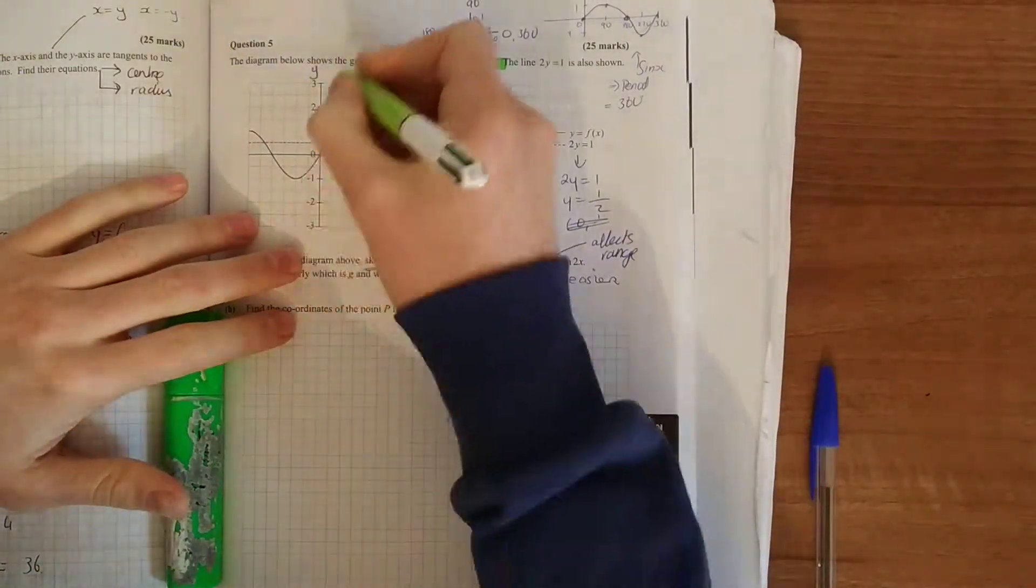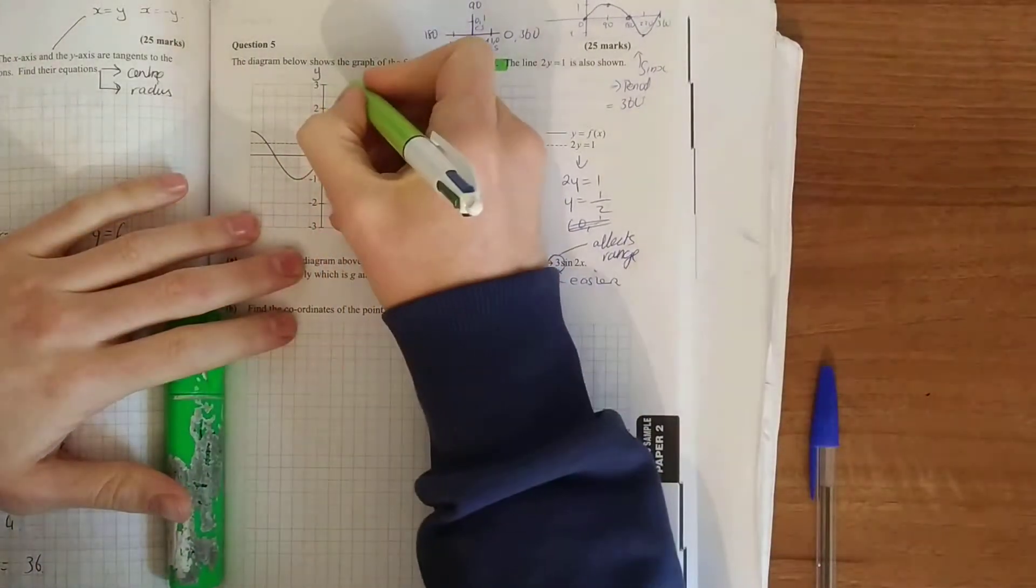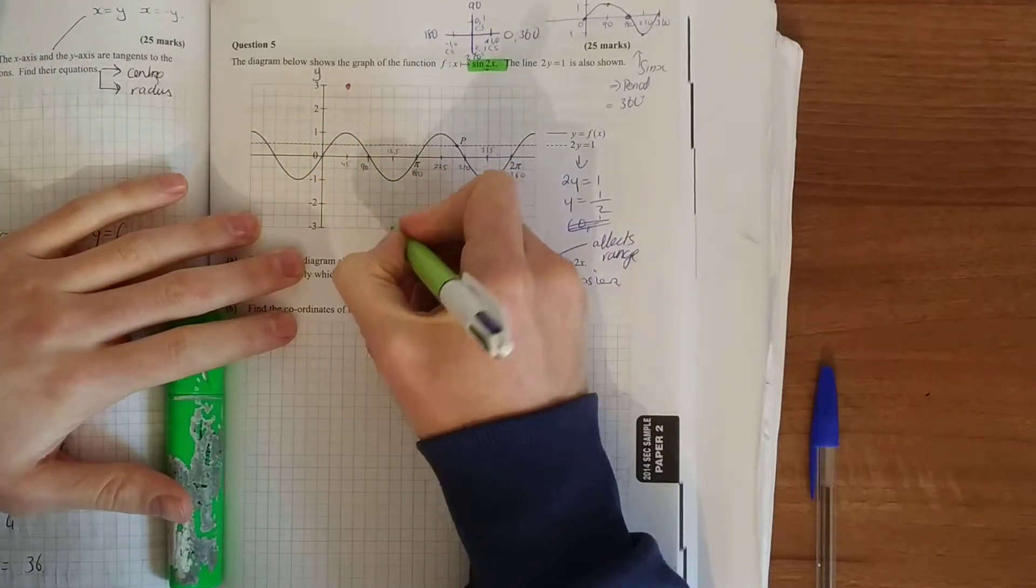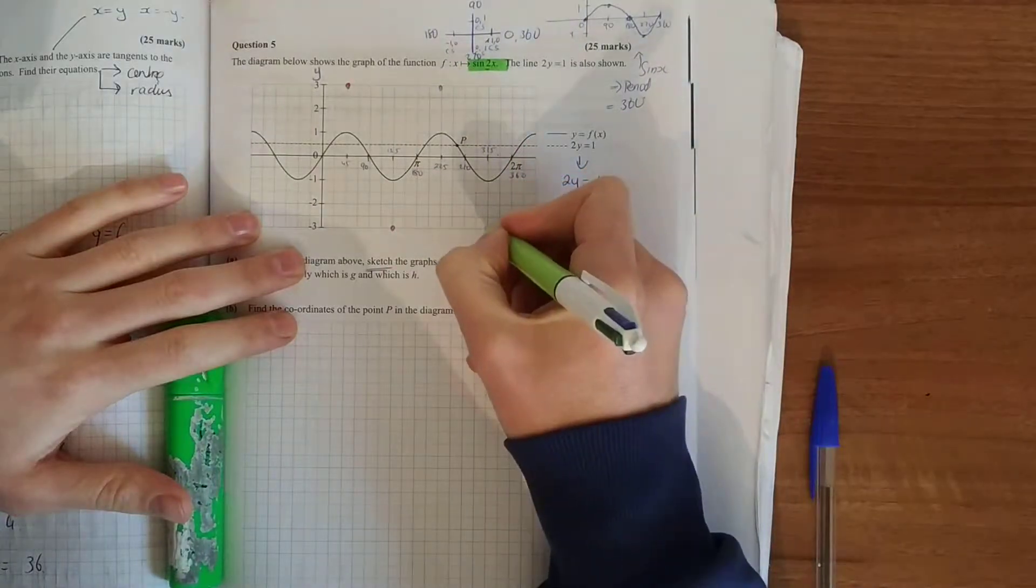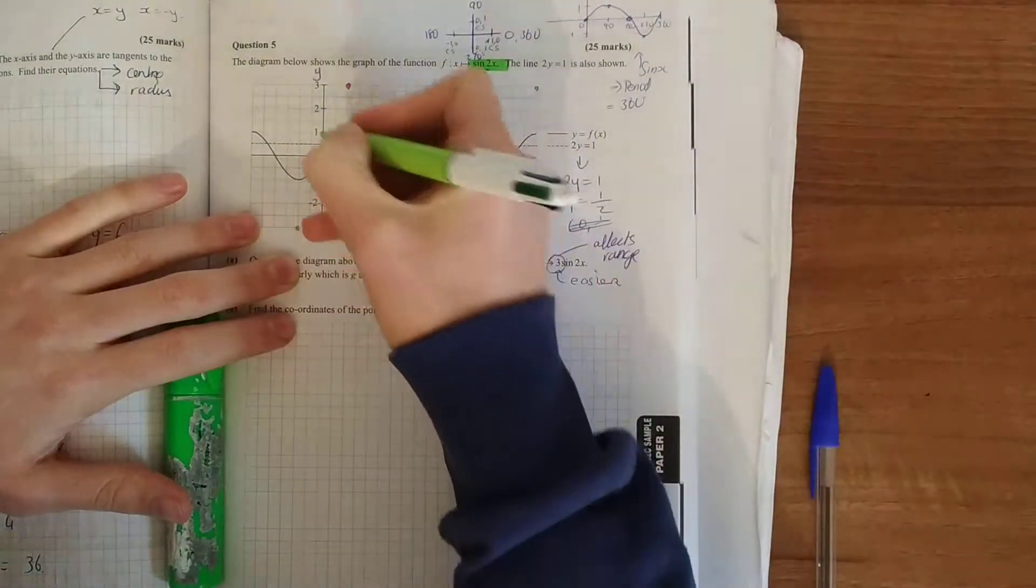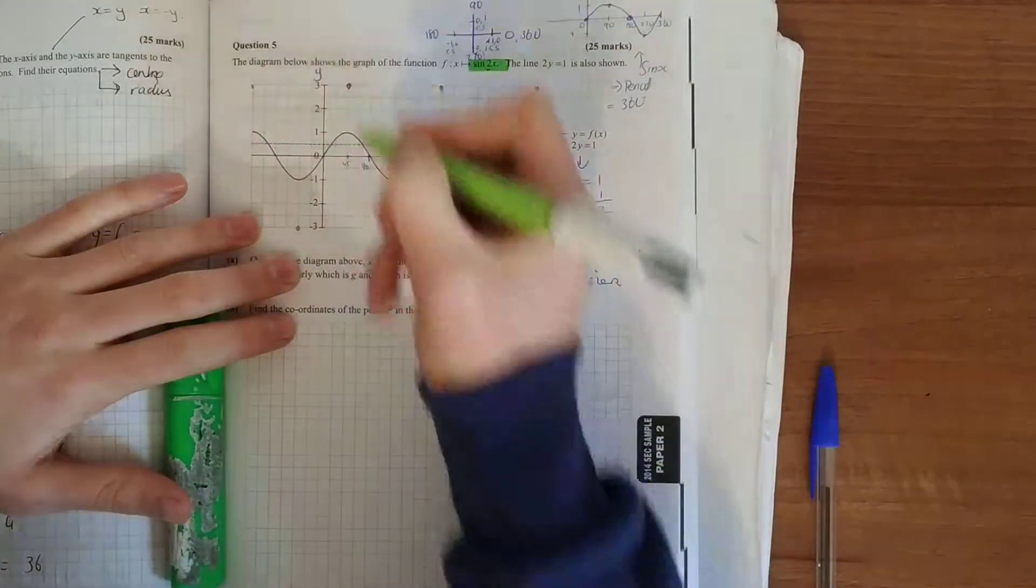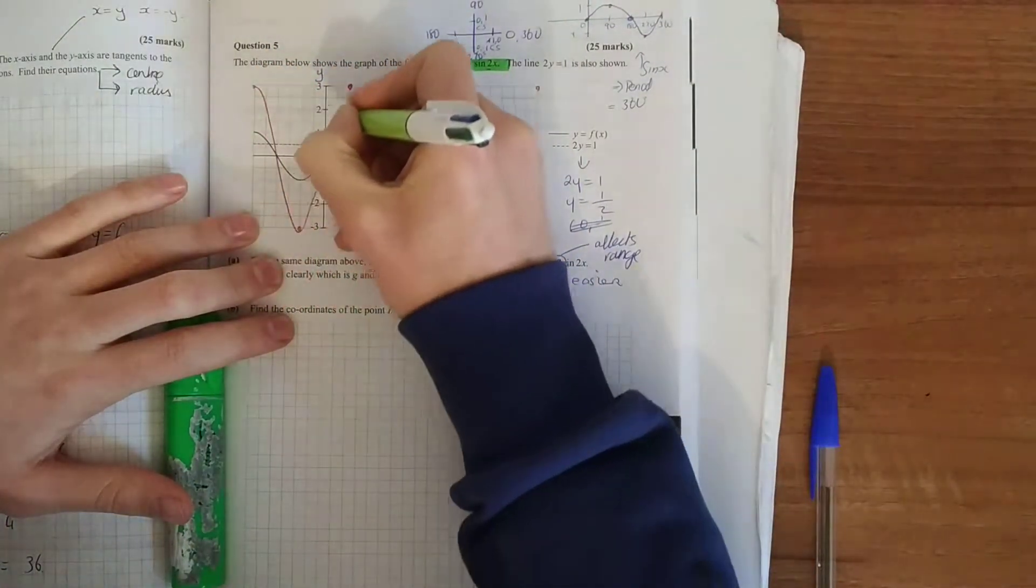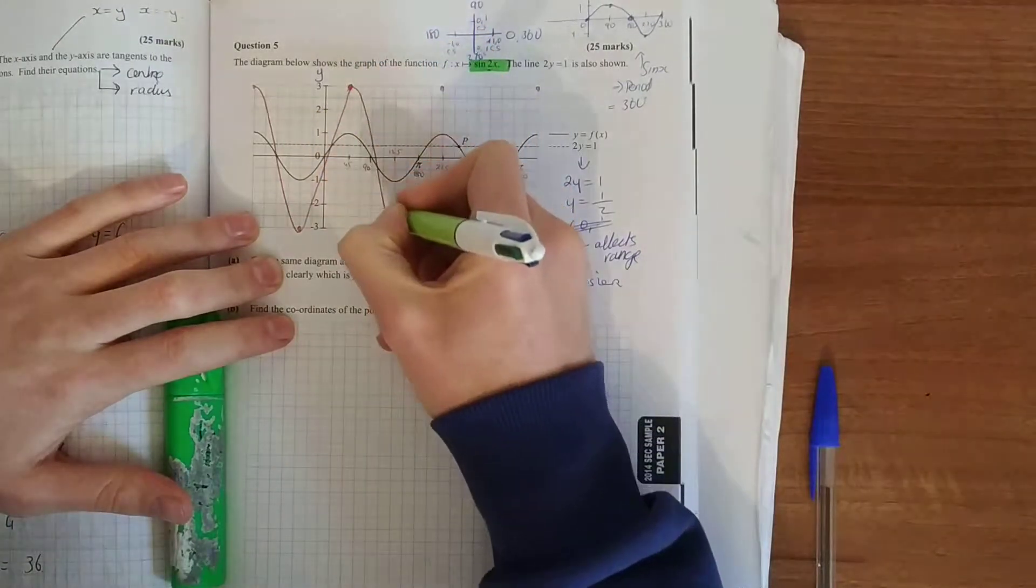If I was sketching that, I take these peaks three times as high up. This is going to go down three times as much, this is going to go up. Your period is not affected, the range is. Just join that up a nice smooth curve as best as you can.